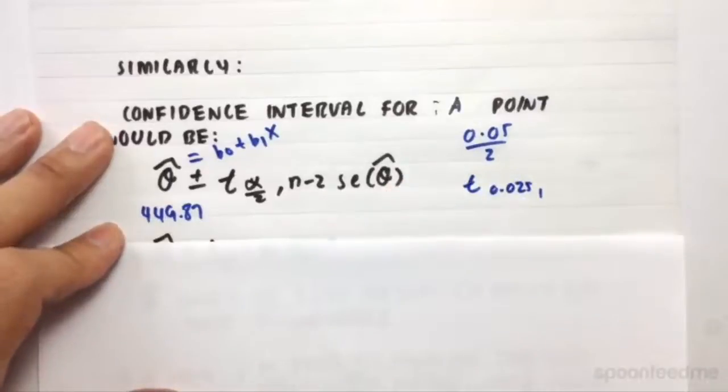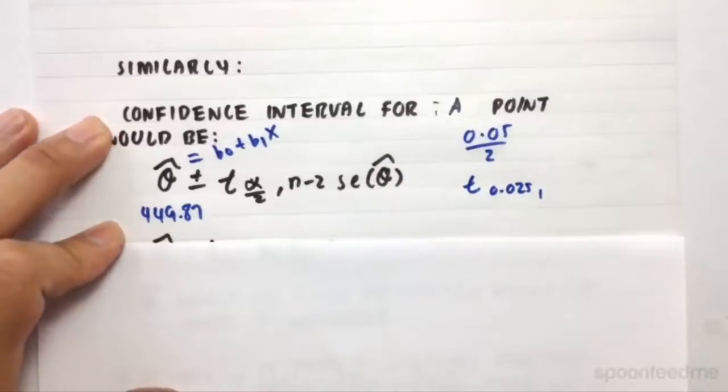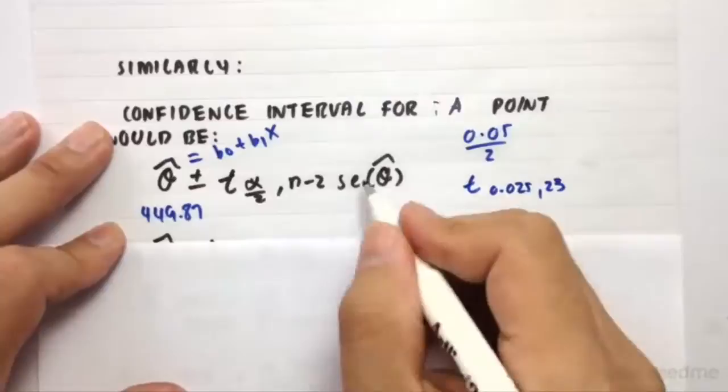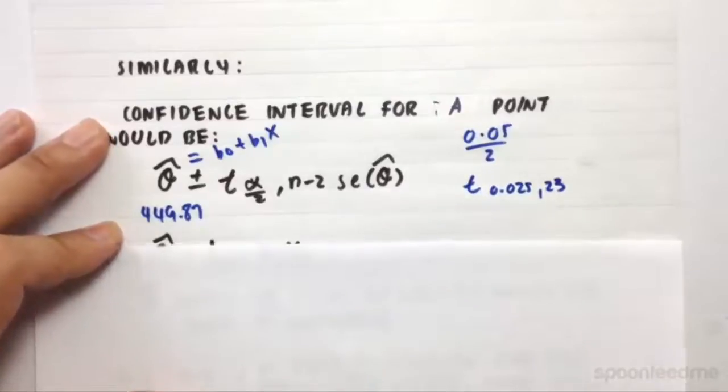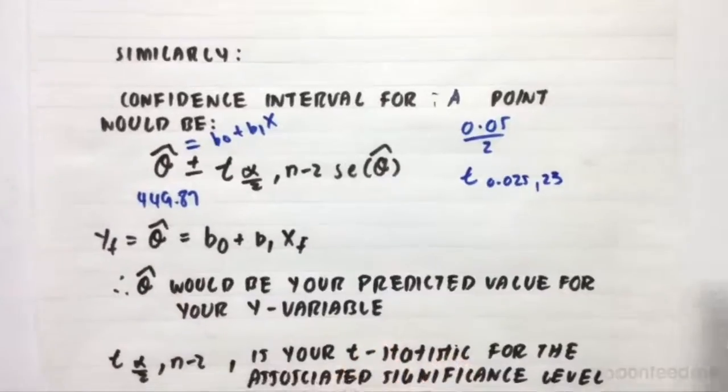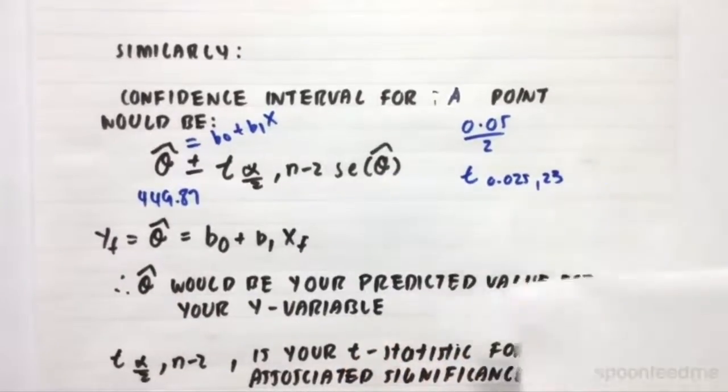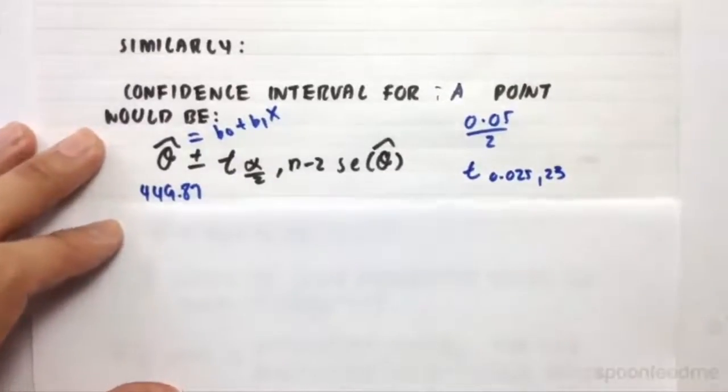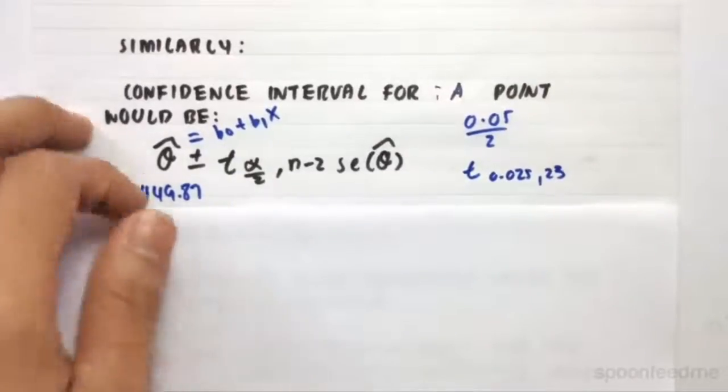We have 25 years worth. So 25 minus 2 is 23. And then we just multiply that by the standard error that we have. So if we, we usually have, to get the standard error, you usually get an Excel output, and it will tell you what the standard error is.